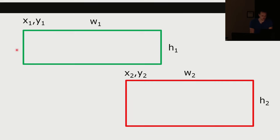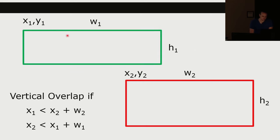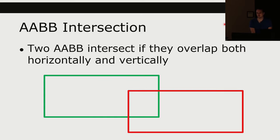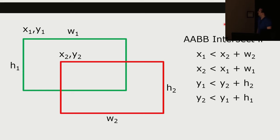For vertical overlap, we have to check if the left of this one is to the left of this, and if the left of the other one is to the left of this: x1 is less than x2 plus w2, and x2 is less than x1 plus w1. If there is horizontal and vertical overlap, we have an AABB intersection. Axis-aligned bounding boxes intersect if they are horizontally and vertically overlapped. That's just four if-statements — much more efficient than the 16 of checking all the points.